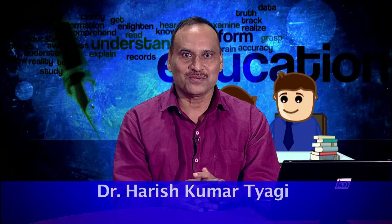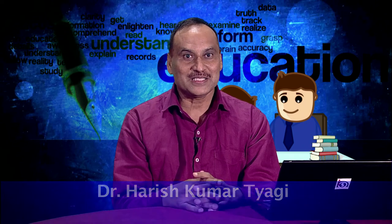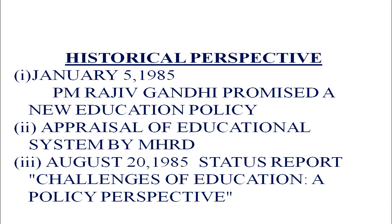Hello learners, I am Harish Kumartyagi. Today we are going to learn the national policy on education 1986 and its revised policies 1992. After learning this policy, we can see how the present system of education is based on this policy. The then Prime Minister Rajiv Gandhi had promised to bring a new policy on education in India, and later it was brought on August 20th in 1985. This is known as the policy of education 1986.